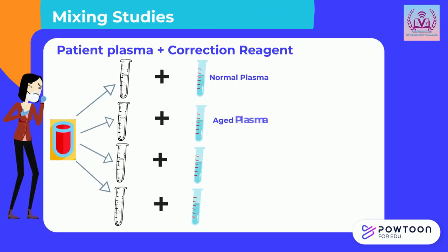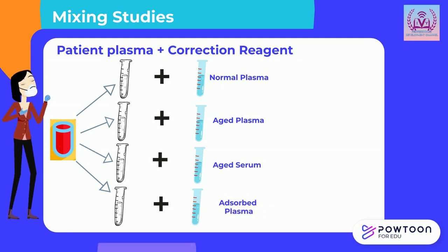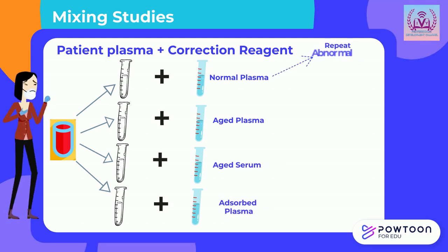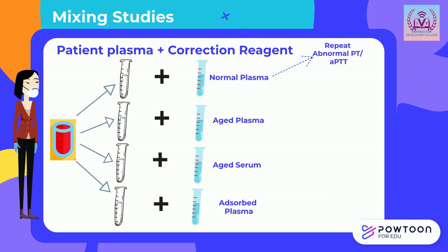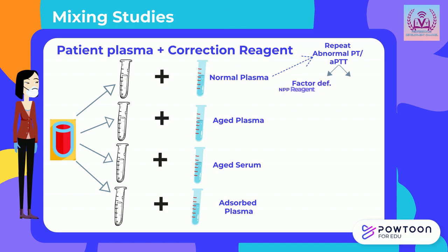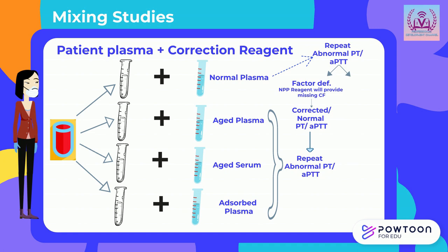When performing mixing studies, the patient's plasma is mixed with different correction reagents and then the abnormal PT or aPTT is retested on the mixed sample. If the cause of the prolonged PT or aPTT is a factor deficiency, the normal pooled plasma will increase factor levels enough to correct the prolonged result. However, normal pooled plasma will not correct the prolonged result if the cause is a coagulation inhibitor.